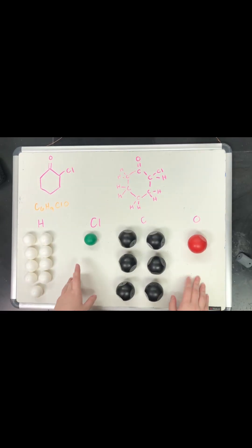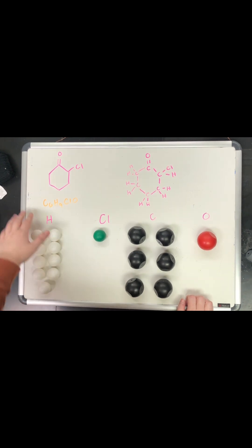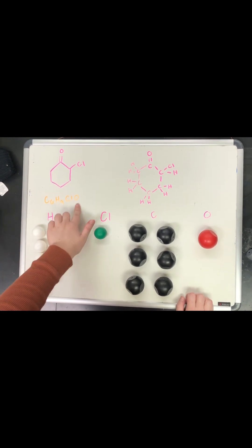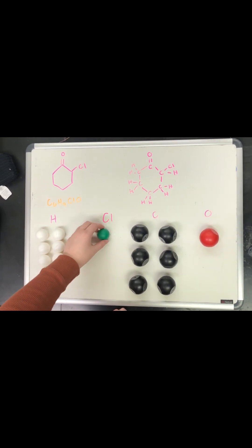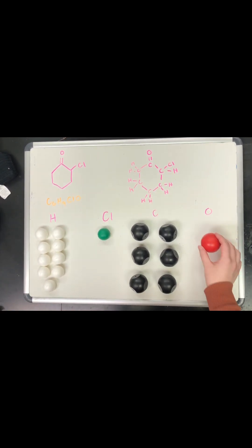All right, so I'm going to teach you how to make a physical structure for 2-chlorocyclohexanone. The molecular formula for that is C6H9ClO. So we have six carbons, those are the black atoms here, nine hydrogens, which are the nine white atoms here. We have one green atom, which is chlorine, and we have one red atom, which is oxygen.